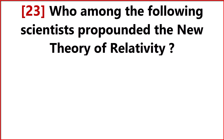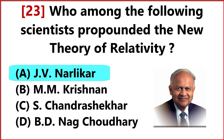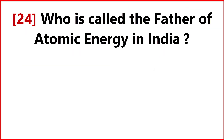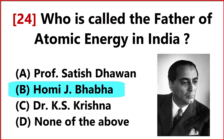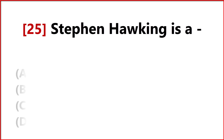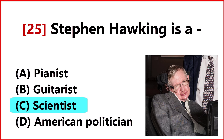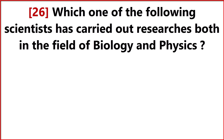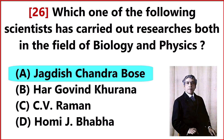Who among the following scientists propounded the new theory of relativity? Answer Option A: J.V. Narliker. Who is called the father of atomic energy in India? Answer Option B: Homi J. Bhabha. Stephen Hawking is Answer Option C: a Scientist. Which one of the following scientists has carried out research in both the field of biology and physics? Answer Option A: Jagadish Chandra Bose.